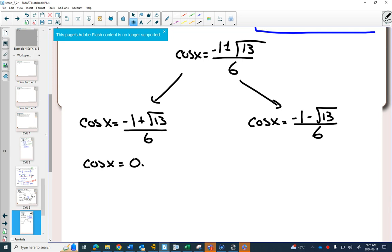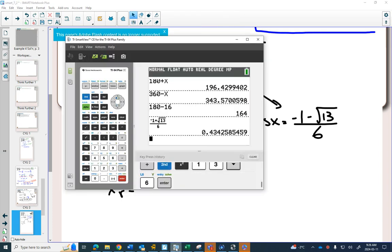So -1 + √13 over 6 equals 0.434. And the reason it's nice to change it to a decimal here is now I can see that it's positive, so I'm going to want to find a reference angle. And then cos is positive in quadrants 1 and 4.